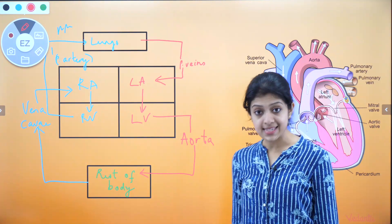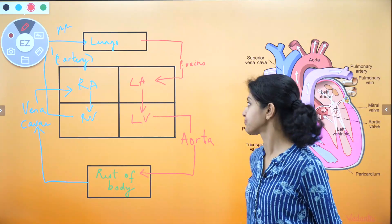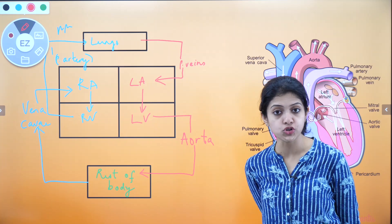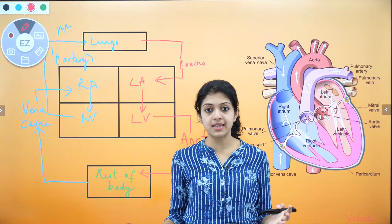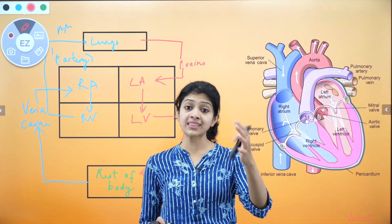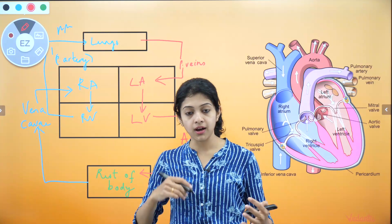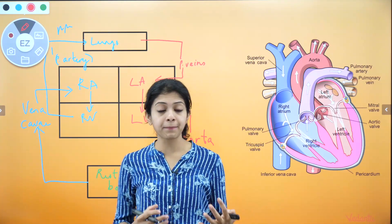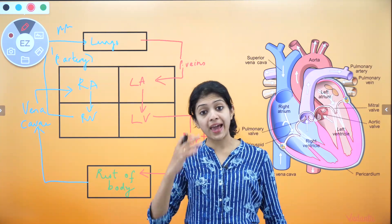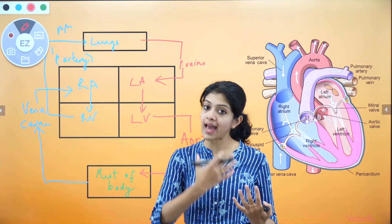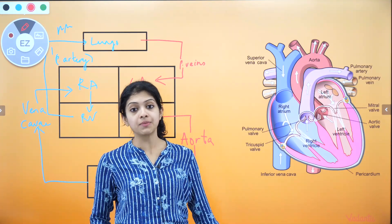This is how the schematic representation of blood circulation in the human circulatory system looks. Note it down if you want to, or better still, draw it from memory after this session. The more you can recall and write from memory, the better you'll retain it. Try to picture this pathway in your mind and then draw it out — it will be a handy revision tool, especially for last-minute review.